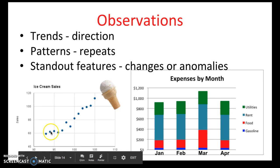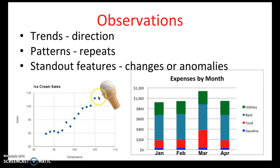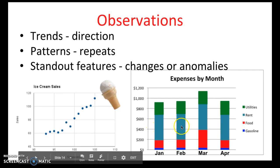So in the case for the ice cream sales, the trend we found was as the temperature increases, the number of sales increase. And that's a trend. And the pattern we found in the expenses by month is this person spent more money each month on rent than any other expense.